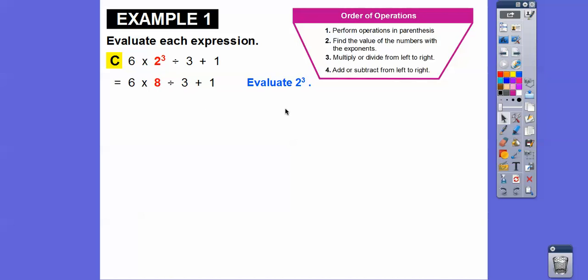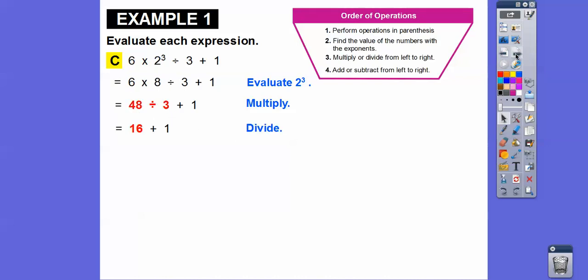There are no parentheses, and we've handled the exponent. Now we multiply or divide from left to right. Multiply comes first going from the left, so we do six times eight first. Six times eight is 48, and then 48 divided by three is 16. Then 16 plus one is 17.